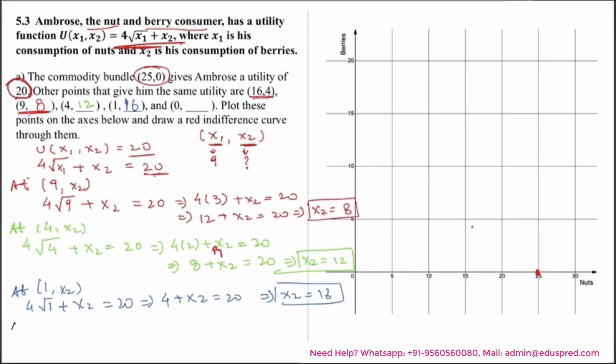Lastly, x1 is taking the value of 0. Your point is (0, x2). That would be 4 square root of 0 plus x2 is equal to 20. This would be x2 is equal to 20.